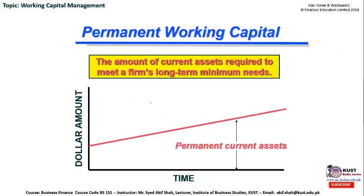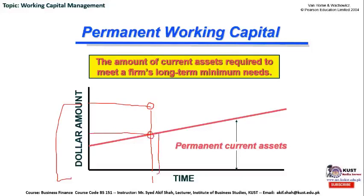For example, this is the level of current assets required at time t1. Out of this total level of current assets, up to the intersection point we are in need of permanent current assets, and above that there could be a seasonal portion that will drop down later when the season gets over.